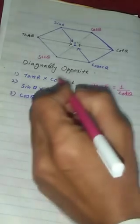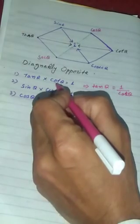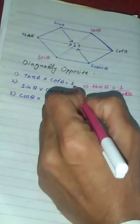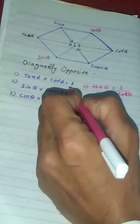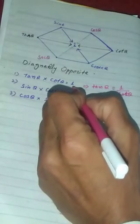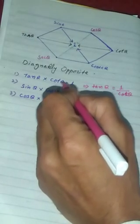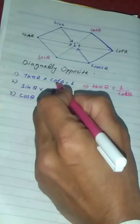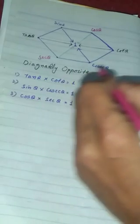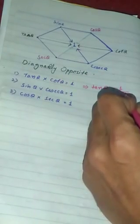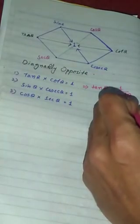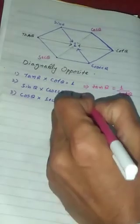Now, we divide both sides by cotangent theta. If you divide the other side, you get cotangent theta, and 1 divided by cotangent theta.